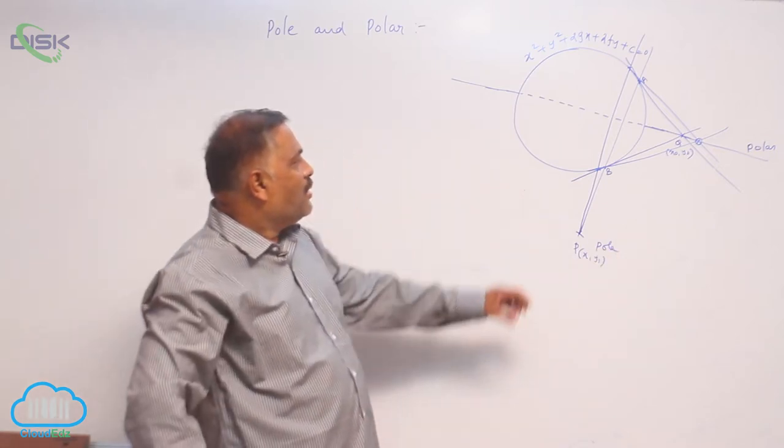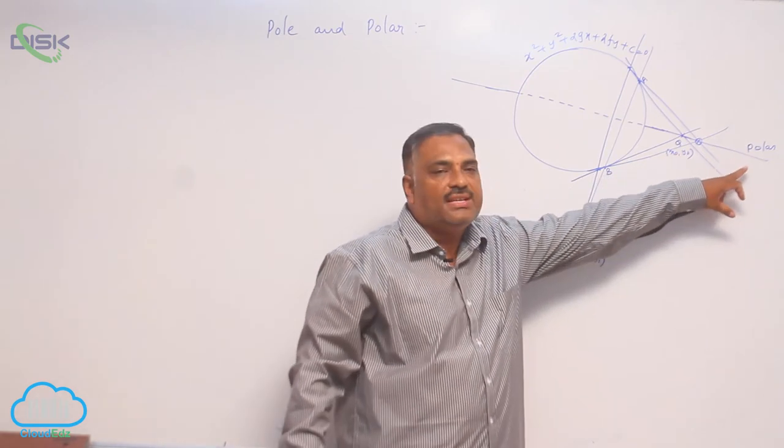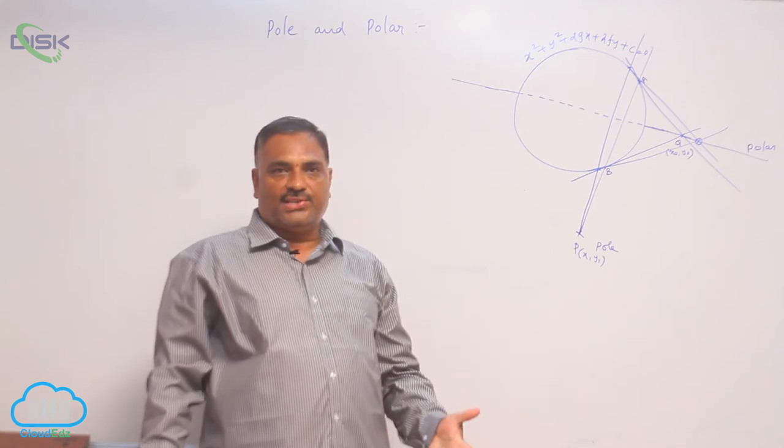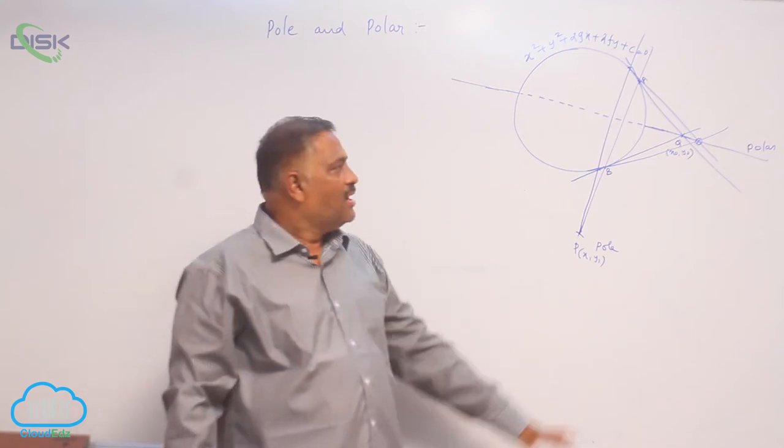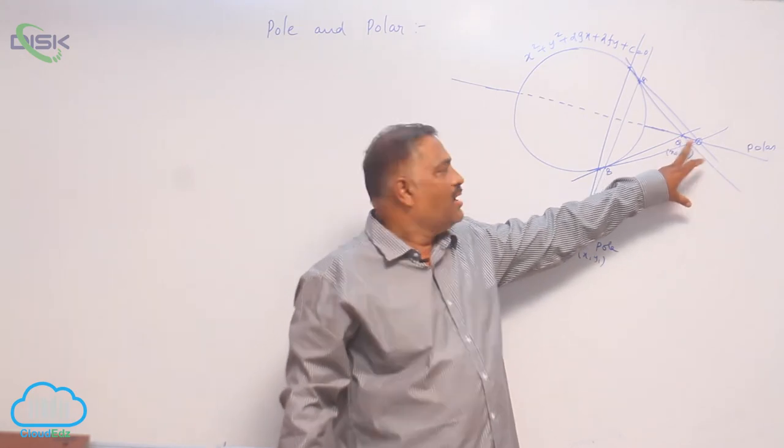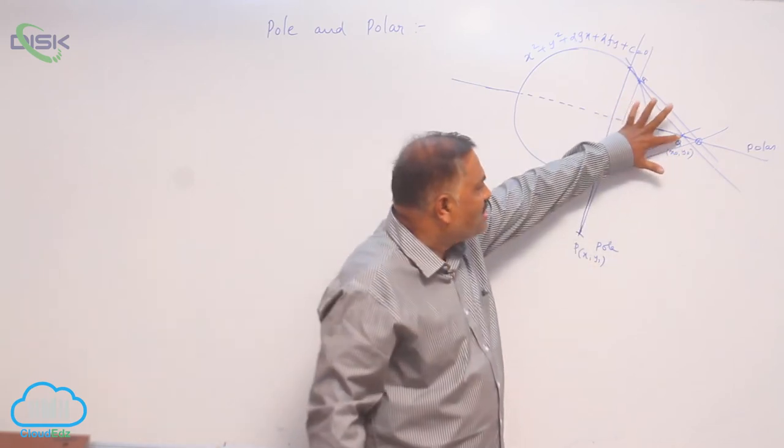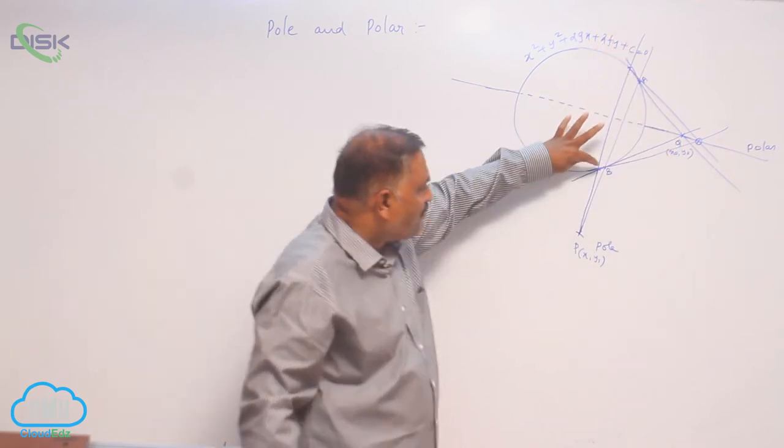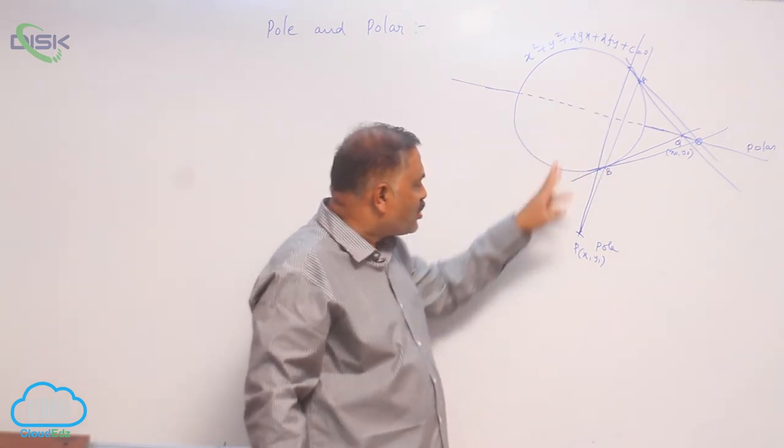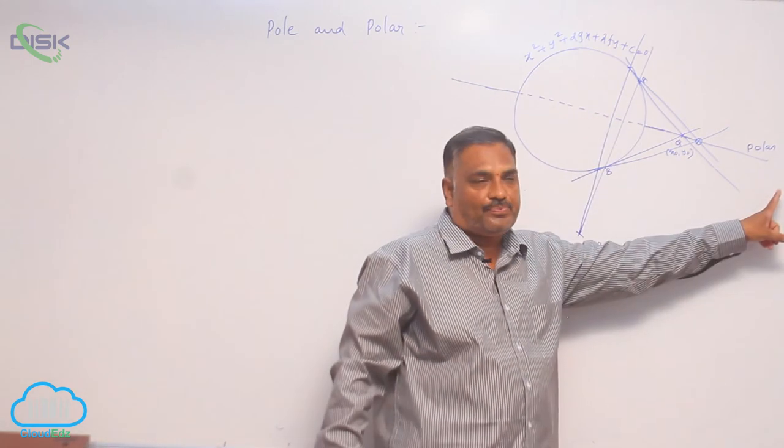Now, what is the concept of pole polar? A polar is a straight line. A straight line is nothing but collection of points, that is nothing but locus. It is the locus of points of intersection of tangents drawn at the extremities of the chords of a circle which passes through a given fixed point. This locus is a straight line.